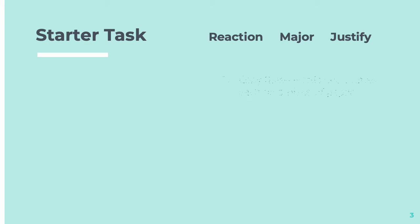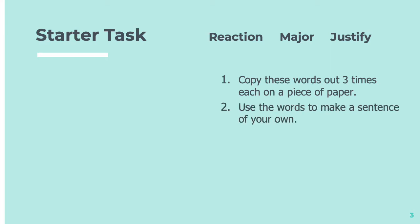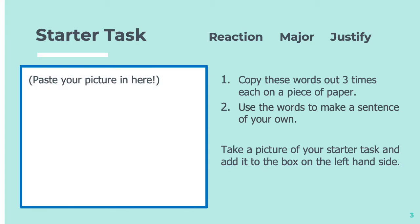So we'll get started with a little task to get your brains warmed up. Again, we're going to be copying out these three words which have come from the academic words list. I'd like you to do that on a piece of paper and then use the words to make a sentence of your own, take a picture, and add your work to the box on the left hand side here. The words for this starter task are reaction, major, and justify. So pause the video and do that first.